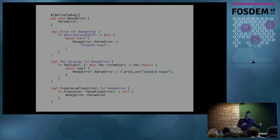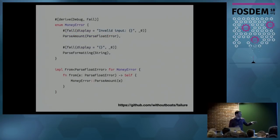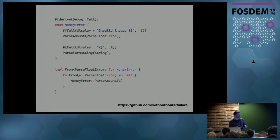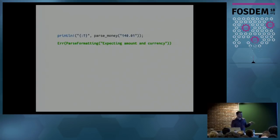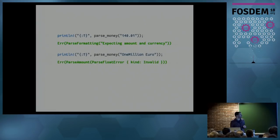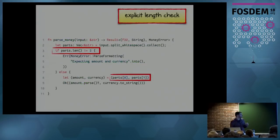There's a library called `failure` that makes this easier. The same code can be expressed much more concisely. Here we even have two error types: `ParseAmountError` for parsing the amount, and `ParseFormattingError` if we don't have two elements. We separate the error types and keep the implicit conversion from `ParseFloatError`. With that, you get beautiful error messages: if you try to parse something without a currency, you get 'expecting amount in currency'; if the digits are invalid, you get the `ParseFloatError` kind 'invalid'.